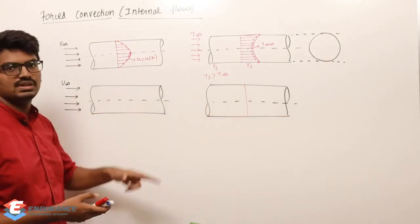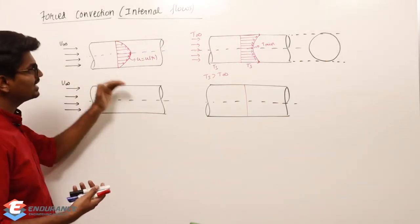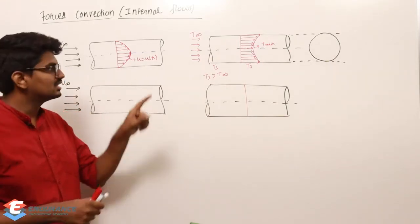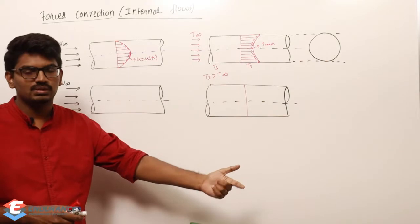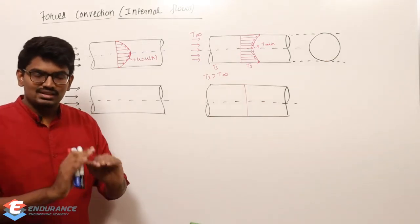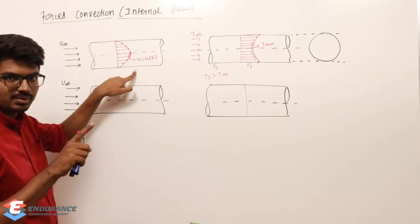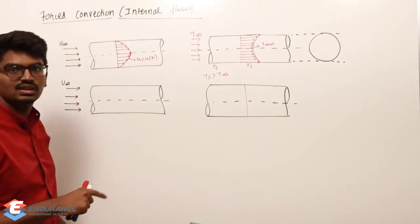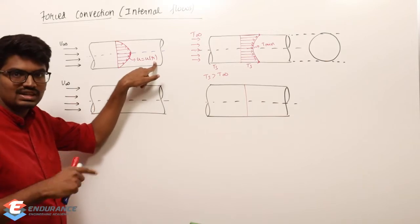When fluid flows inside a pipe with a free stream velocity, there is going to be some entrance length and then a fully developed region. In that fully developed region, we have a velocity profile. On the surface of this circular pipe, velocity will be zero and it will increase from the surface to the center. So velocity is a function of r - there will be development of a velocity profile.